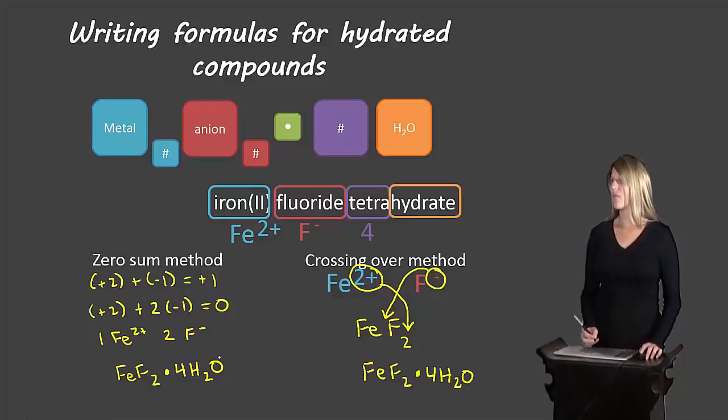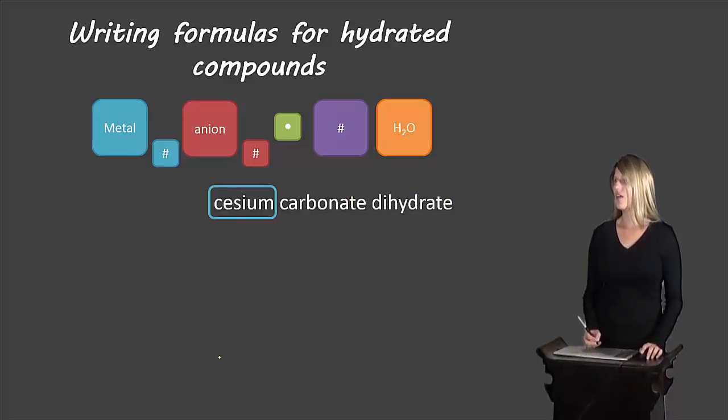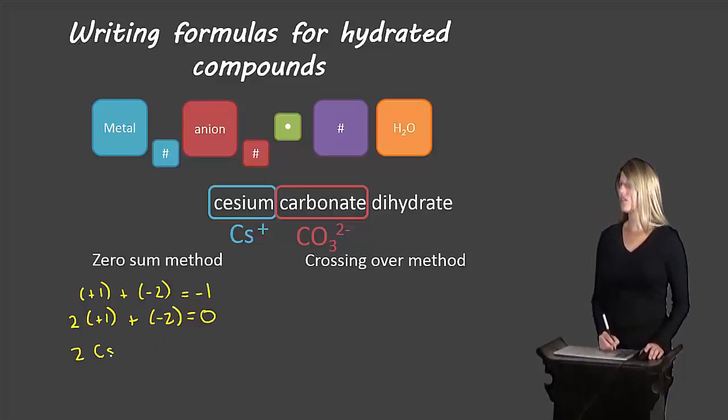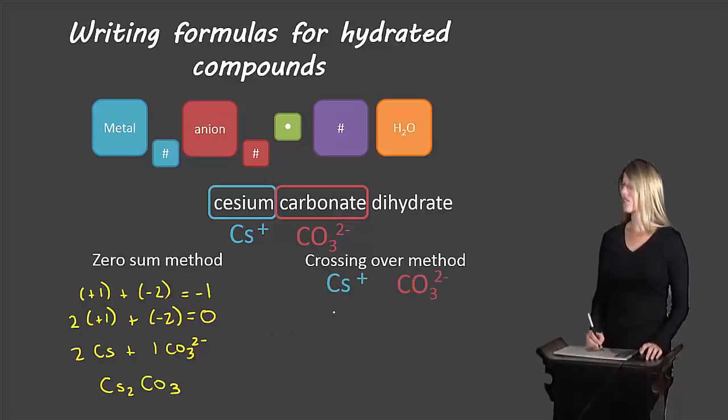Let's take a look at another example. Cesium carbonate. So we have cesium as our metal which is Cs with a 1 plus charge and carbonate which is our polyatomic anion CO3 with a 2 negative charge. So we can use our zero sum method. A 1 plus charge added to a negative 2 gives us a negative 1 charge. But if we had two cesiums to the carbonate then we end up with zero and we're always aiming for zero. So that means we need two cesiums and one carbonate. So we end up with Cs2CO3.